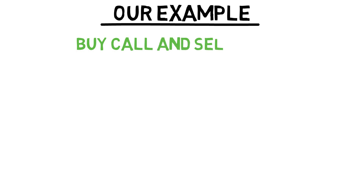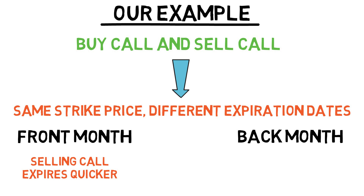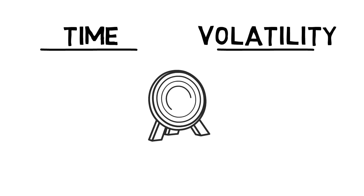In our calendar spread option example, we are going to simplify things. In simple terms, we will be buying a call and selling a call for the same strike price one month apart. The front month, or the one expiring quicker, we will sell, while the back month, or the one expiring further into the future, we will buy. The goal of this strategy is to profit from time and volatility, so it is important for the strike price to be as near as possible to the underlying asset price.